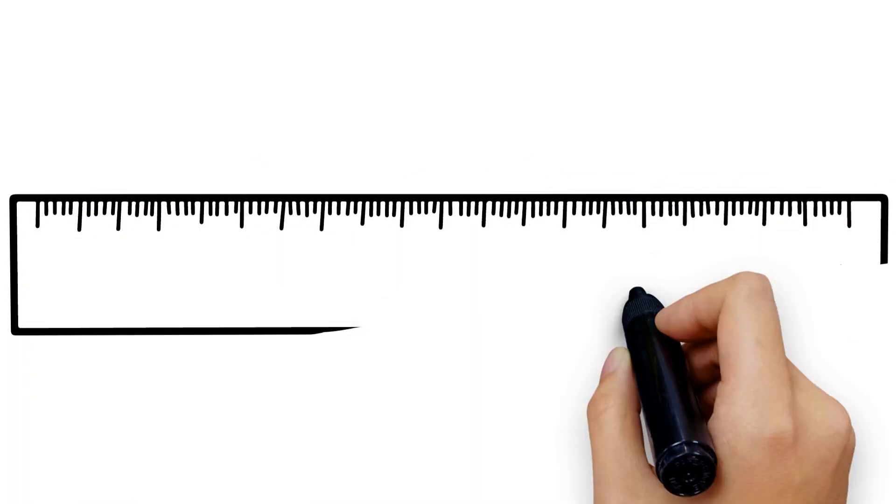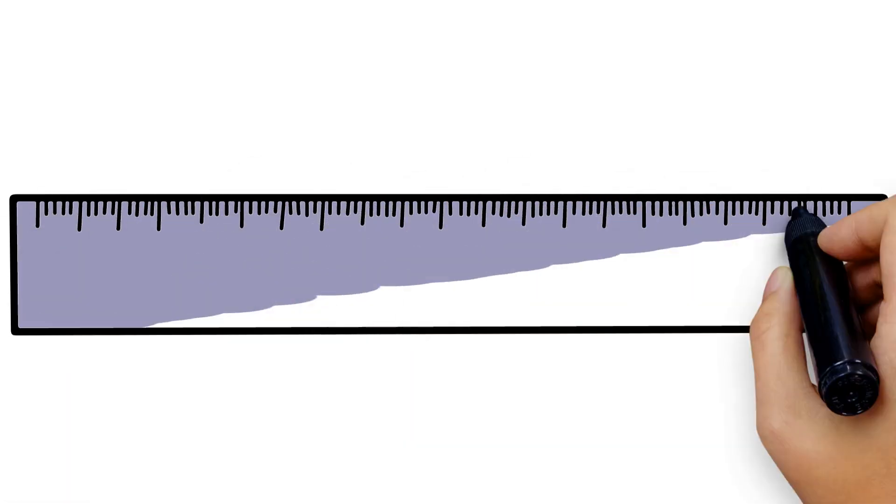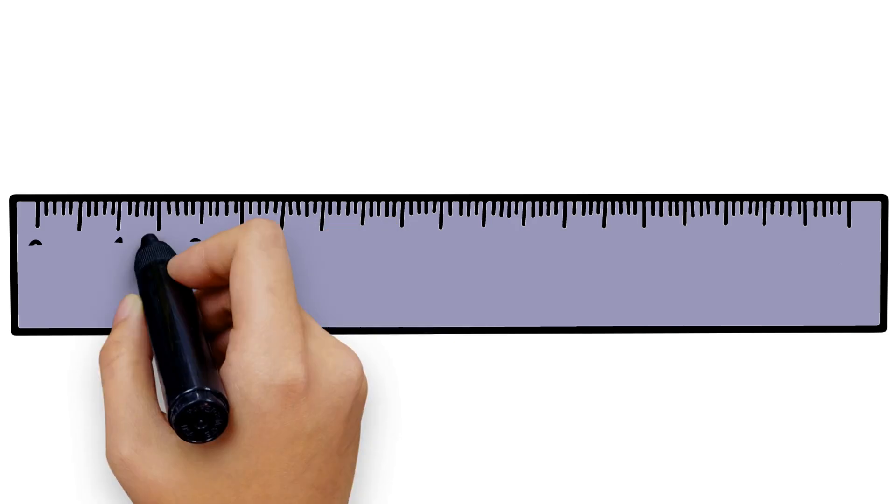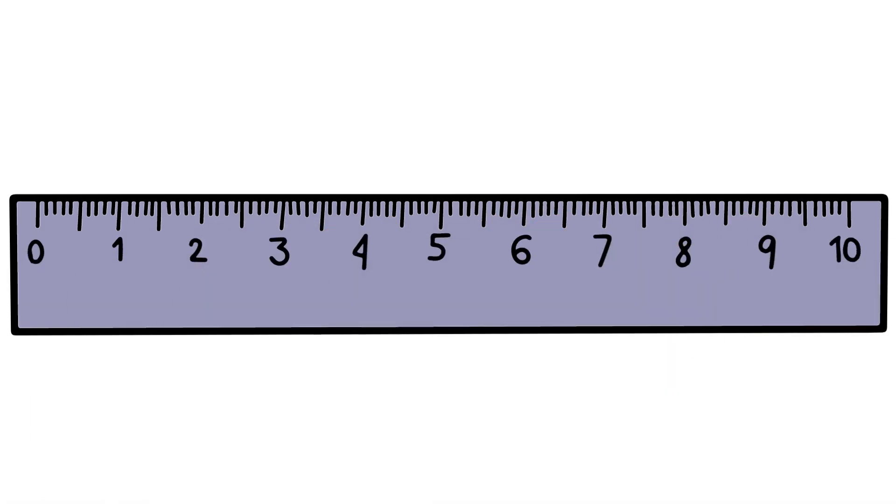The Readiness Ruler is a helpful tool to use when trying to quit or reduce vaping. This tool helps you to determine your readiness by thinking about how important making a change to your vaping is and how confident you are in making that change.